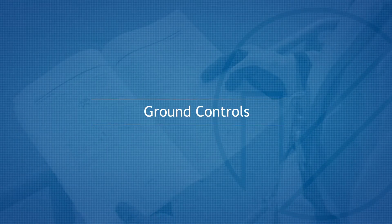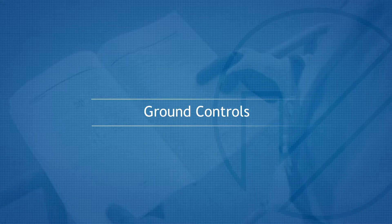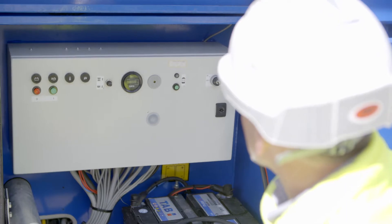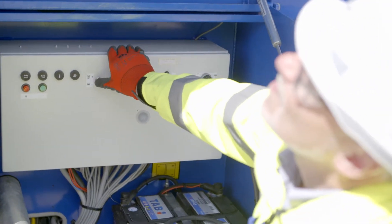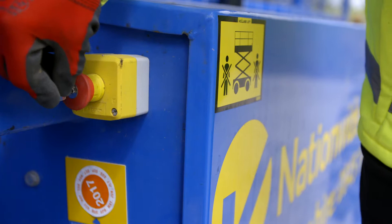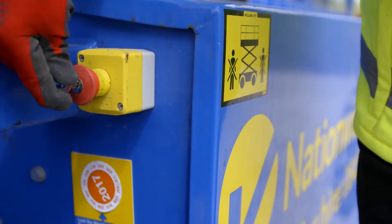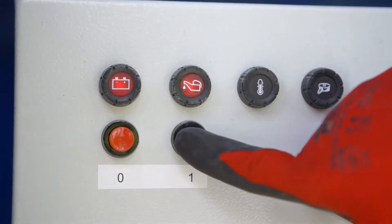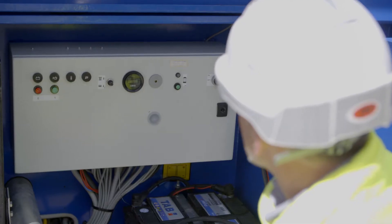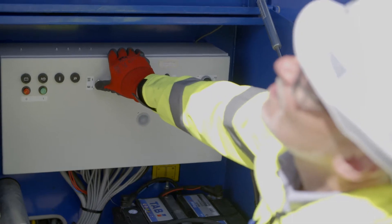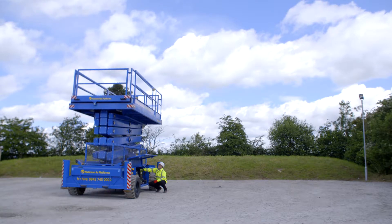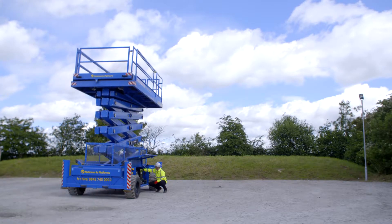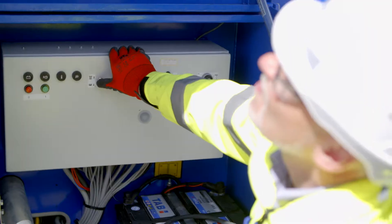Ground controls: The engine and lift functions can be operated from the ground control panel, while the emergency stop can be found close by. To start the engine, unlock and pull out the emergency stop before pressing the green engine button until the engine starts. You can now operate the lift and lower functions. Pressing the red button will stop the engine. Visual and audible warnings are activated when the relevant functions are operated.